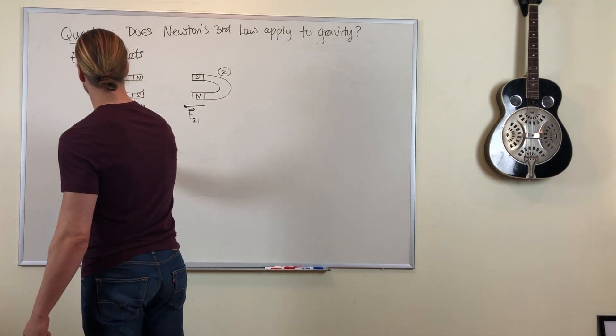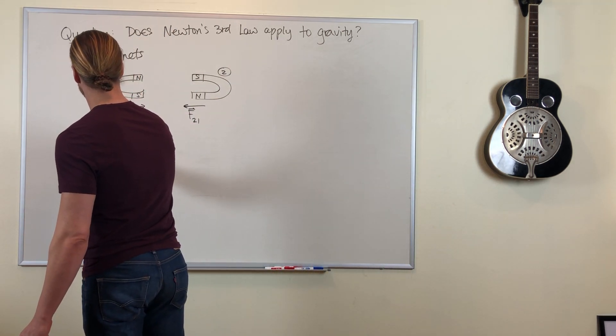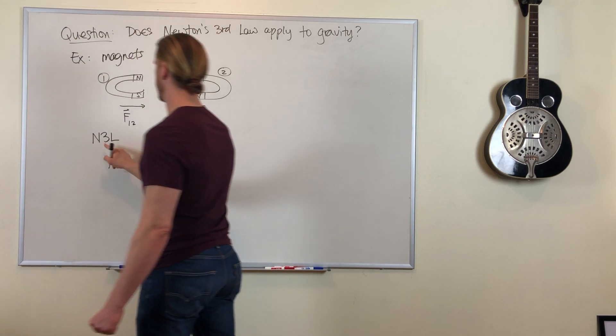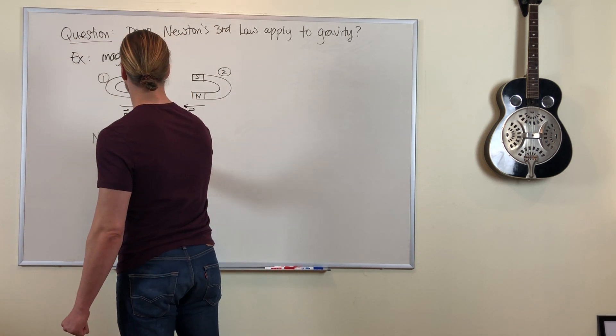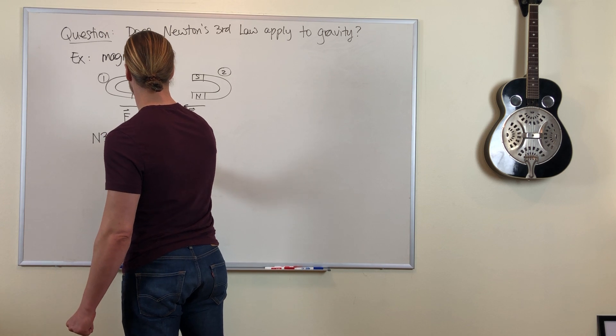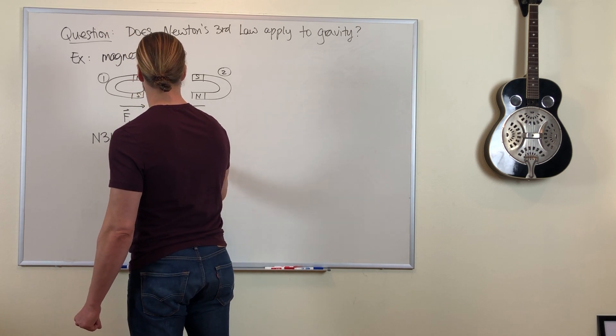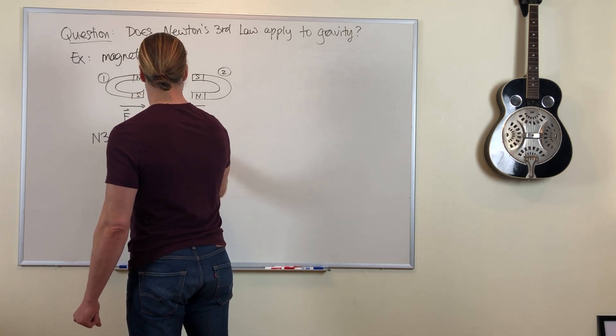So Newton's third law says that F12 equals negative F21.